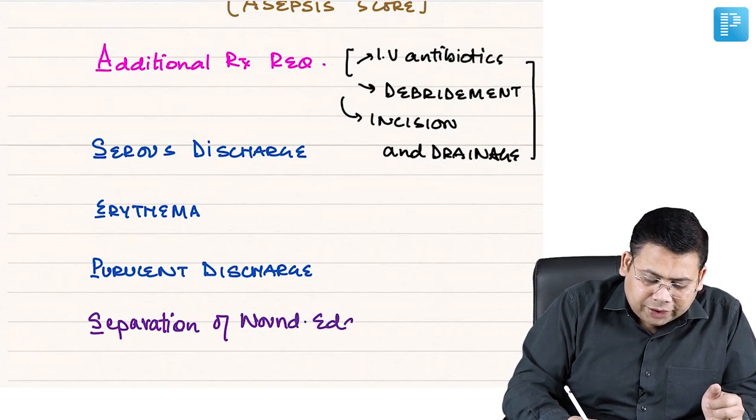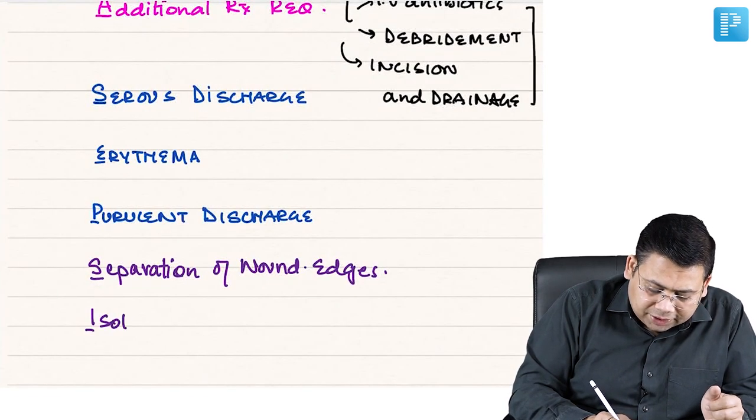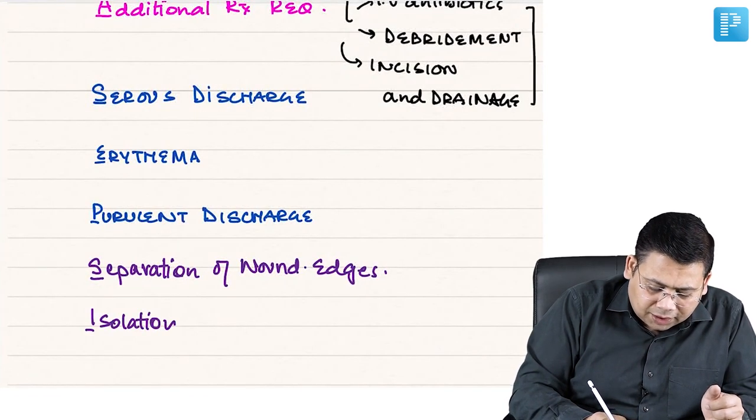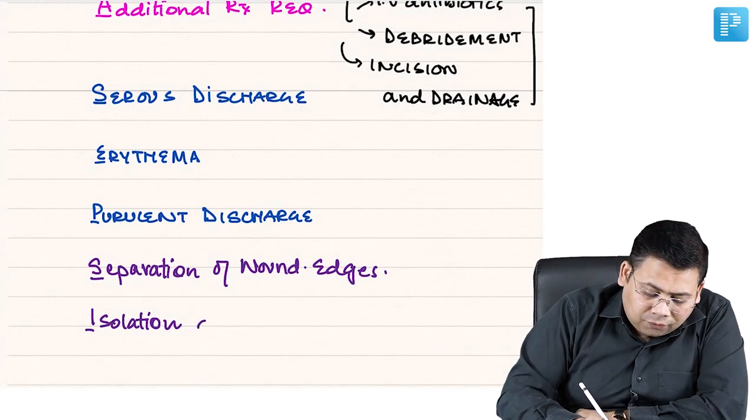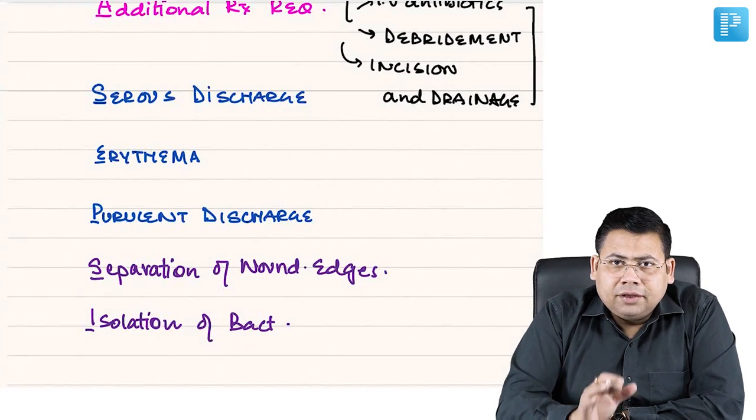I stands for isolation of bacteria. What do you mean by isolation of bacteria? It is a culture that we require - we have taken out culture. So isolation of bacteria.